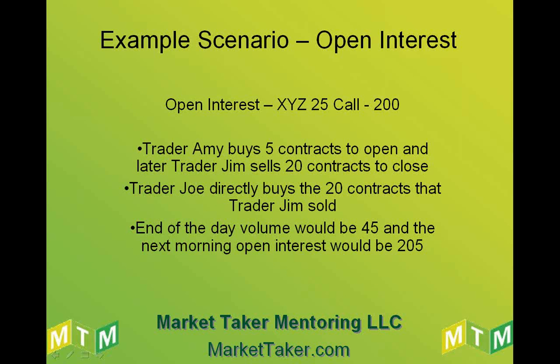Here we have an open interest of 200 for the XYZ 25 call. Trader Amy buys 5 contracts to open, and later Trader Jim sells 20 contracts to close. Trader Joe directly buys the 20 contracts that Trader Jim sold. So the end-of-day volume would be 45 — 5 from Amy, 20 from Jim, and 20 from Joe. The next morning, the open interest would be 205. It increased by 5 because of Amy's 5 contracts. Trader Jim sold his 20 contracts, but Trader Joe directly bought them, so they are still open. The 20s basically canceled each other out, and those contracts remain open.